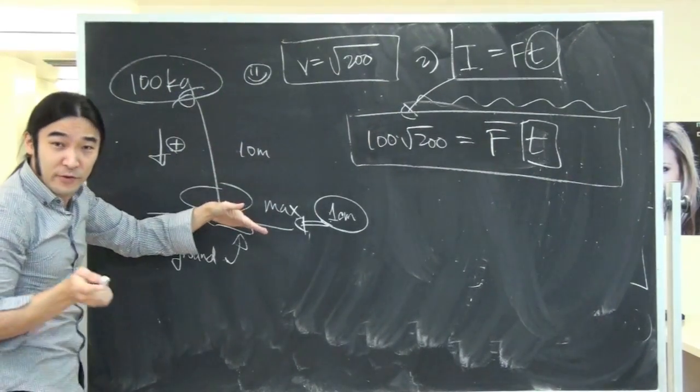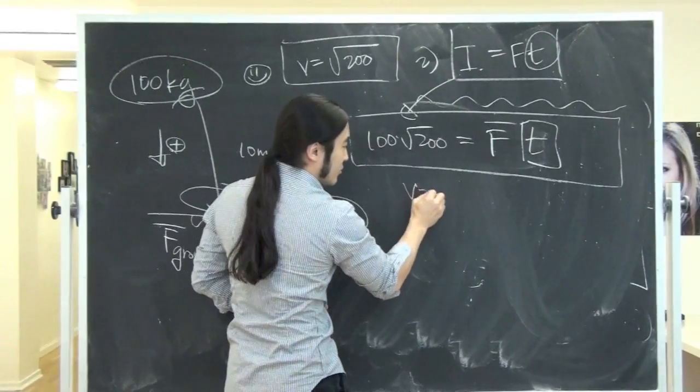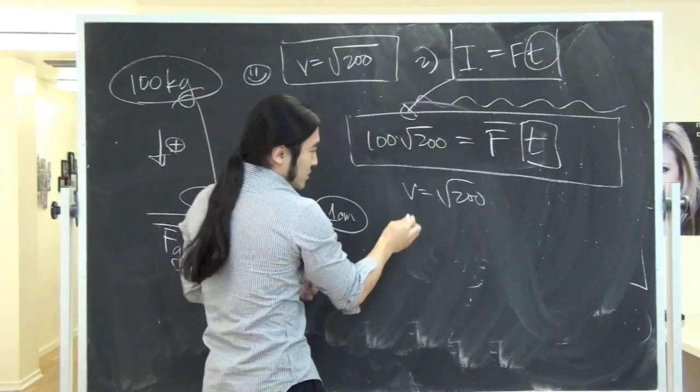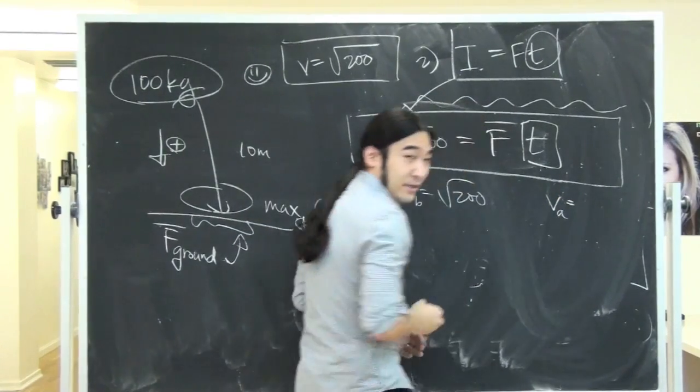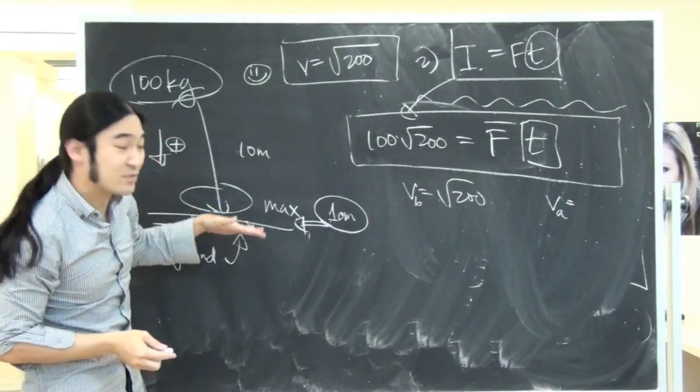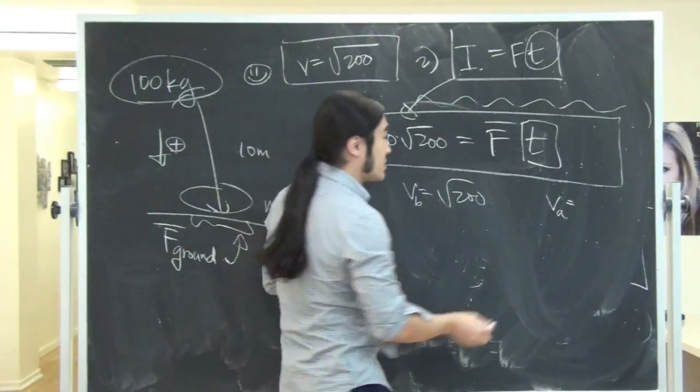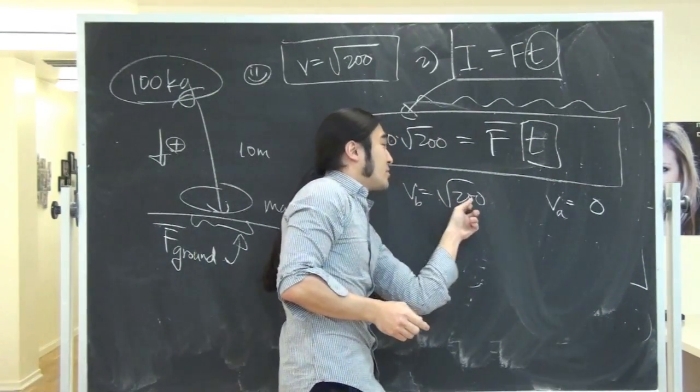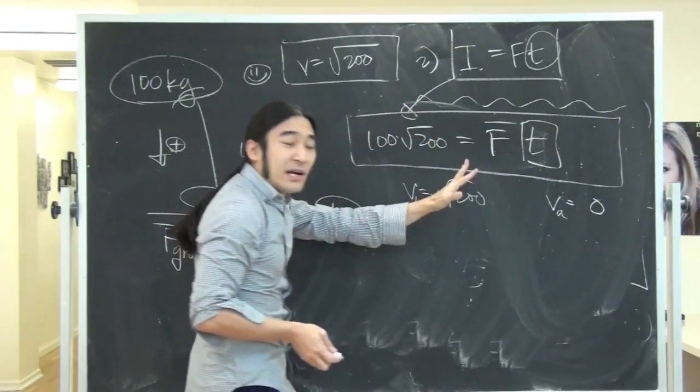So remember, the second before you hit the ground, your velocity we said from before was square root of 200. Then, if you think about after you hit the ground, during the time this guy moves like this, the velocity changes to zero. So that tells me that my velocity is going from 200 to zero.